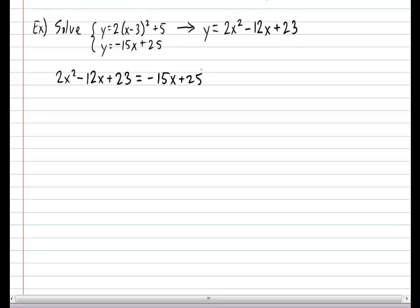So I'm going to shove everything over to the left side. So I end up with 2x squared minus 12x plus 15x plus 23 minus 25. And the empty side becomes 0. When I simplify everything, I end up with 2x squared plus 3x minus 2 equal to 0.